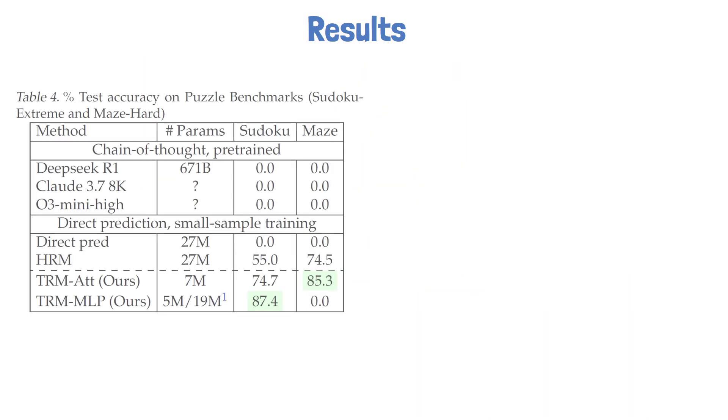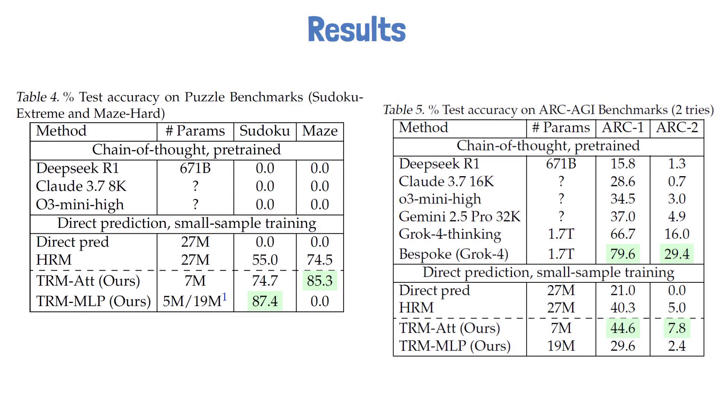In the following tables from the paper, we can see the results of the Tiny Recursive Model on these benchmarks, comparing to Hierarchical Reasoning Model and top reasoning models such as Gemini 2.5 Pro and Claude 3.7. On the Sudoku benchmark, we see an accuracy jump of more than 30 percent with a model of only 5 million params. The difference between the two versions of the model is that one uses self-attention and the other replaces that with an MLP block inspired by the MLP-Mixer paper. For Sudoku that works well since the context length is small and fixed, smaller than the size of the model dimension. For maze solving, Tiny Recursive Model shows another 10.8% improvement. On the right we can see the improvement for ARC-AGI 1 and 2, again doing better than top reasoning models which are orders of magnitude larger. Even though this is a task-specific model, that's still impressive.